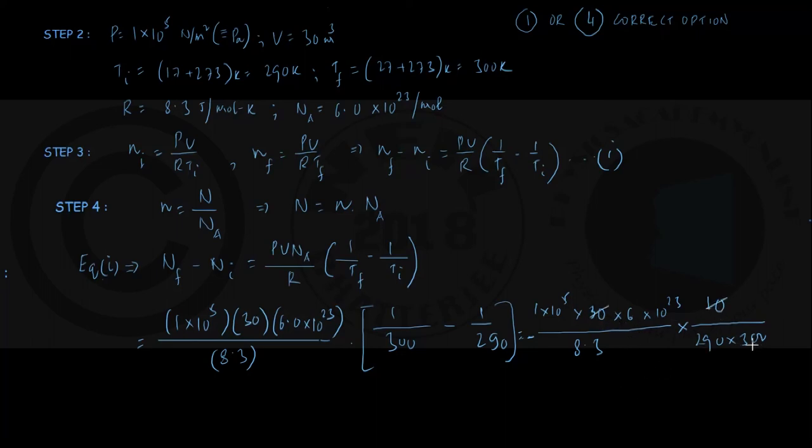Then we have, let me write somewhere here approximately. We have 6 into 10 to the power 28 in numerator. 6 is here, 10 to the power 5 into power 23 gives power 28, that's the numerator. Approximate calculation divided by 8.3 and 290. I can write it as 2.9 into 10 square, and then with an eye on the options available, this 10 square cancelling out makes 10 to the power 26.